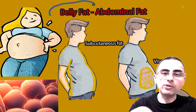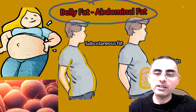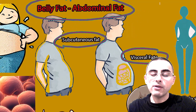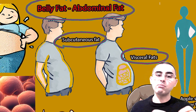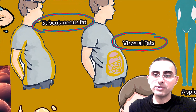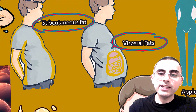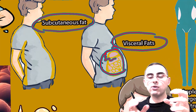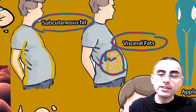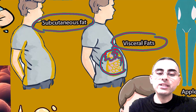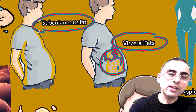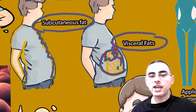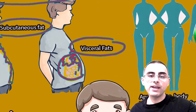We will talk about belly fat or abdominal fat. We have two types: subcutaneous abdominal fat and visceral fat. There is a huge difference — one is dangerous and the other is more safe. Visceral fat is much more dangerous because it is located directly inside the abdomen and envelops the internal organs. Subcutaneous fat is under the skin and is not metabolically active, so it has less health effects and less health risks.